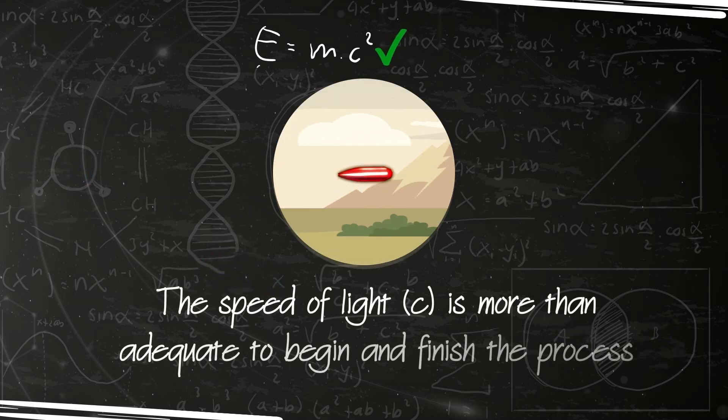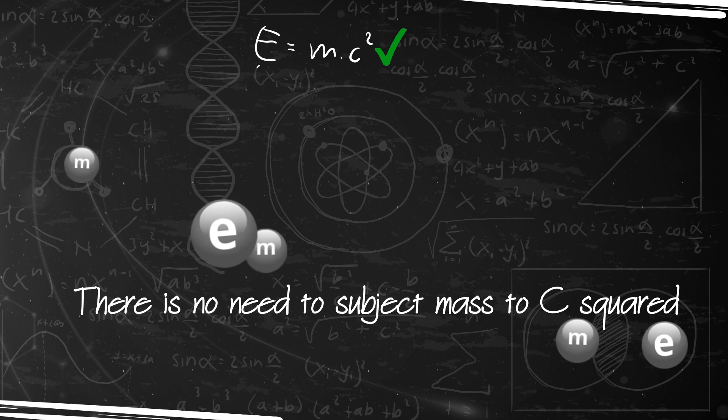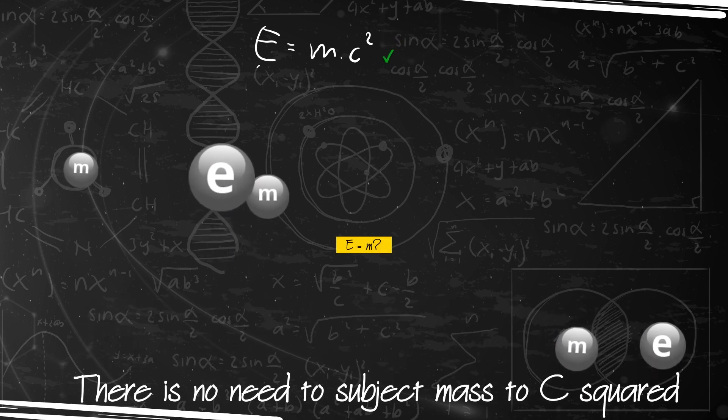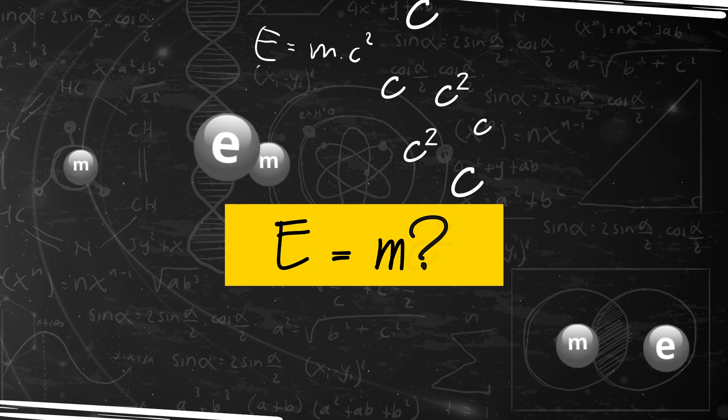The formula fails to require this pivotal information. Moreover, the speed of light, C, is more than adequate to begin and finish the process. There is no need to subject mass to C squared. One can reasonably question why Einstein used C squared instead of C.